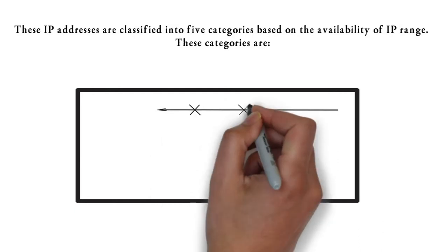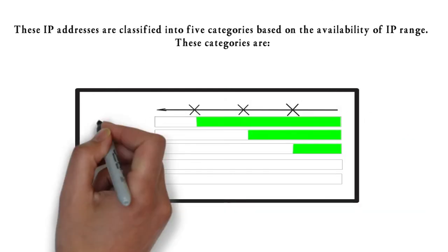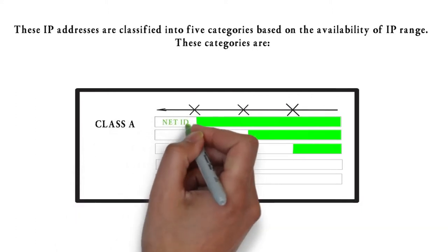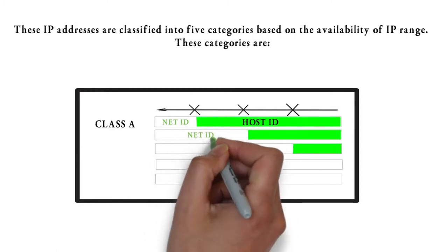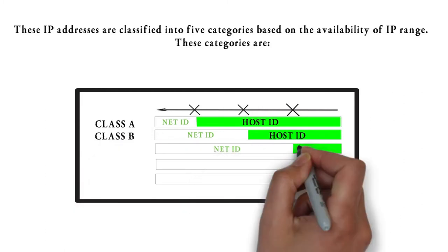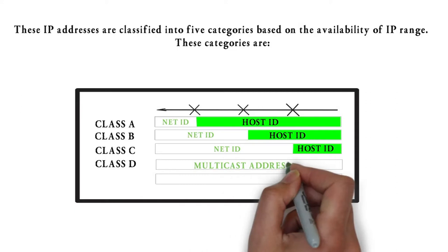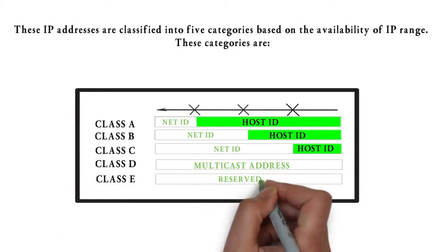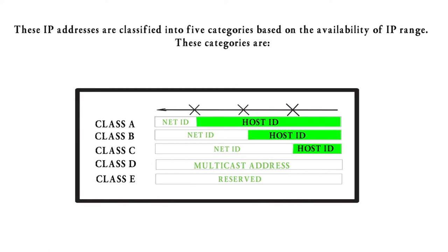The system of IP address classes was developed for the purpose of internet IP address assignment. The classes were based on network size. For example, class A was created for a small number of networks with a very large number of hosts. Class C was created for numerous networks with a small number of hosts. IP addresses are classified into 5 categories based on IP range: class A, B, C, D, and E. Each class has a range of valid IP addresses. The value of the first octet determines the class. IP addresses from the first three classes, A, B, and C, can be used for host addresses. The other two classes are used for other purposes: class D for multicast and class E for experimental purposes.